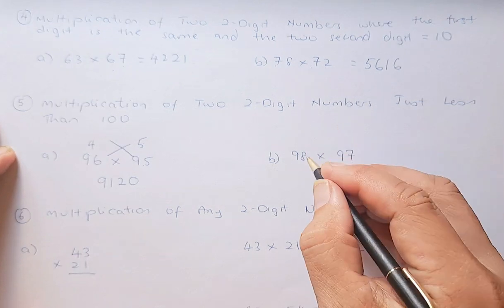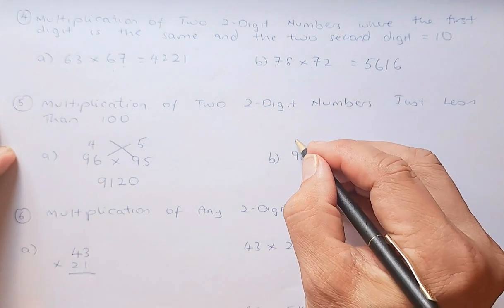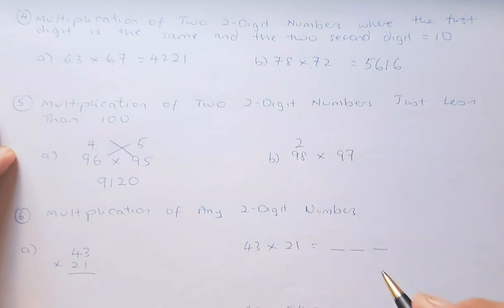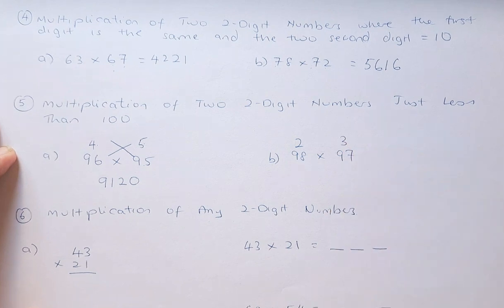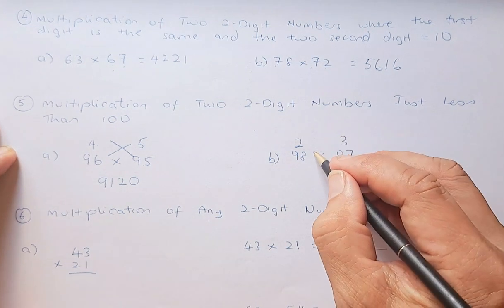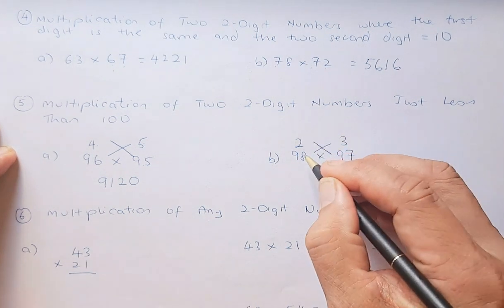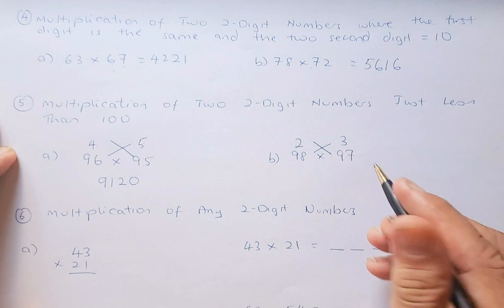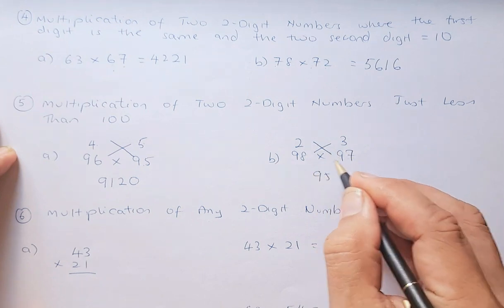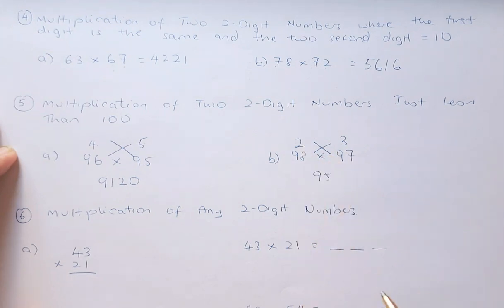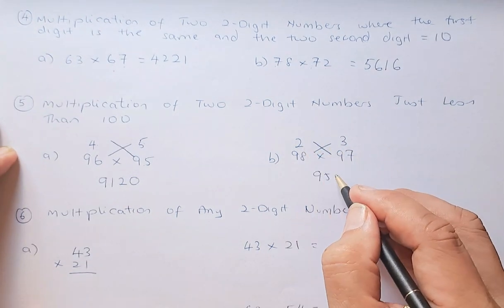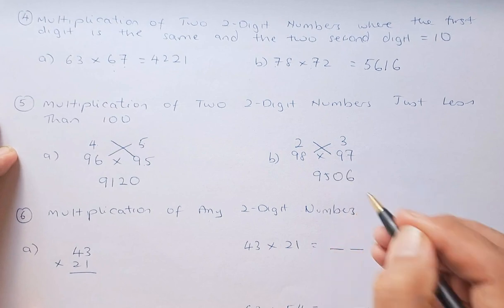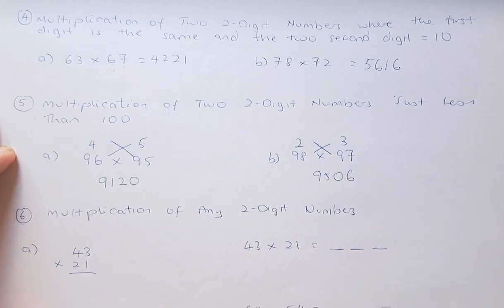For 98 times 97: 98 needs 2 to make 100, and 97 needs 3. Cross-subtract: 98 minus 3 is 95, or 97 minus 2 is 95. Then 2 times 3 is 6, so we write 06. The answer is 9,506.